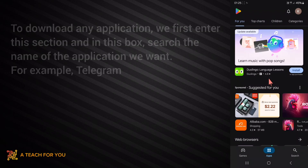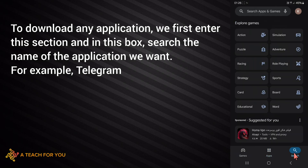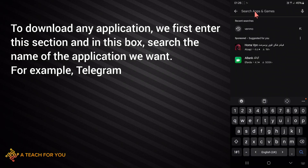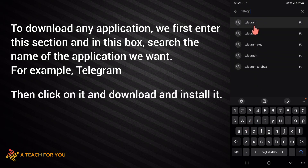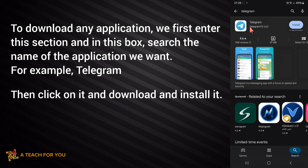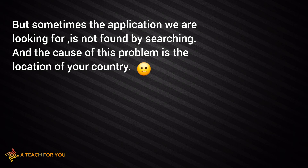To download any application, we first enter this section and in the search box type the name of the application we want — for example, Playground — then click on it and download and install it. But sometimes the application we are looking for is not found, and the cause of this problem is the location of your country.